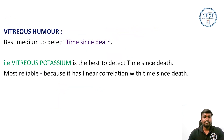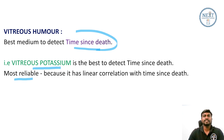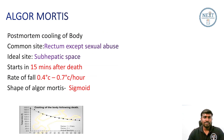The best medium to detect time since death is the vitreous humor. We are going to measure vitreous potassium, and that is the most reliable indicator to check the time since death. Algor mortis refers to post-mortem cooling of the body.